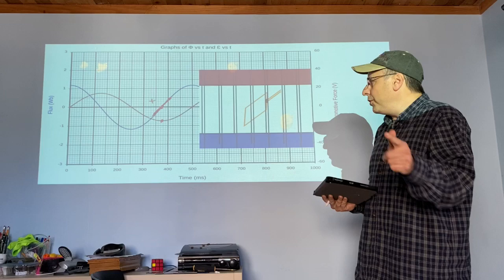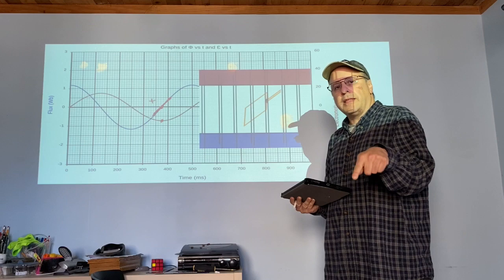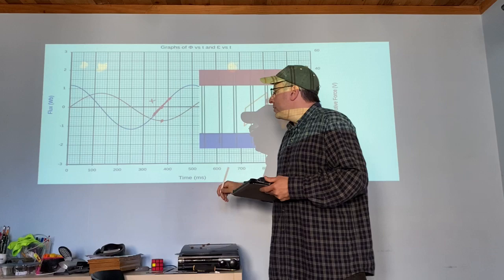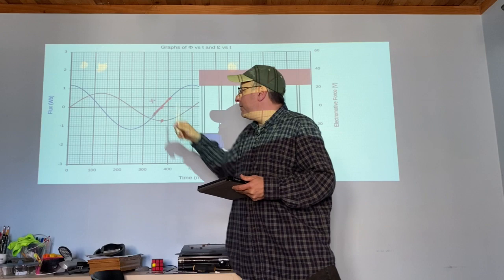Two important ideas: first, the voltage depends not on the flux but on the change in flux — that is, how quickly the flux is changing, the change in flux over time. Second, the voltage has the opposite sign of the slope: when the slope is positive, the voltage is negative; when the slope is negative, the voltage is positive.